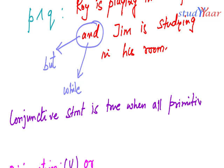So you understand the difference: for a conjunction, all primitive statements must be true.